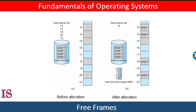Since the operating system is managing physical memory, it must be aware of the allocation details: which frames are allocated, which frames are available, and how many total frames there are. This information is generally kept in a single system-wide data structure called a frame table, or memory map table. The frame table has one entry for each physical page frame indicating whether it is free or allocated, and if allocated, to which page of which process.